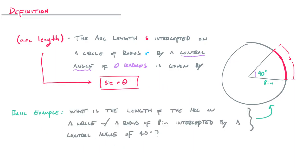So here's a very basic example. And all I did is I kept the same picture and just replaced it with the information that I've given in this little sentence here. But it says, what is the length of the arc on a circle with a radius of eight inches intercepted by a central angle of 40 degrees? Well, remember that theta has to be in terms of radians. So even though we're given everything that we need, we have to convert this 40 degrees into radians to start off with.